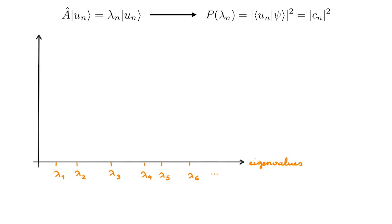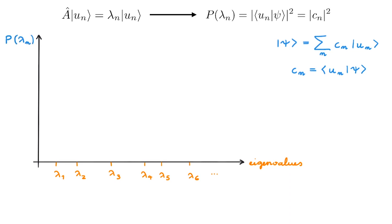Now let's consider our system in state ψ. We first expand the state in the basis provided by the eigenstates of the operator A, using the usual expression. And the expansion coefficients are given by the bracket ⟨u|ψ⟩, as always.